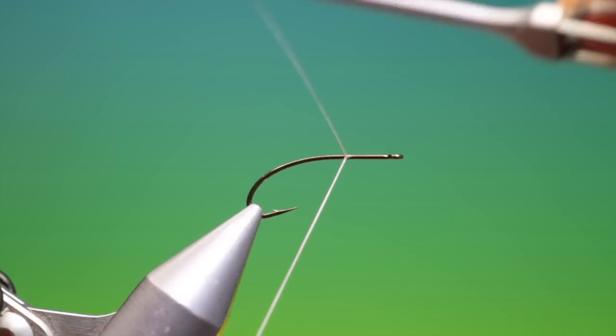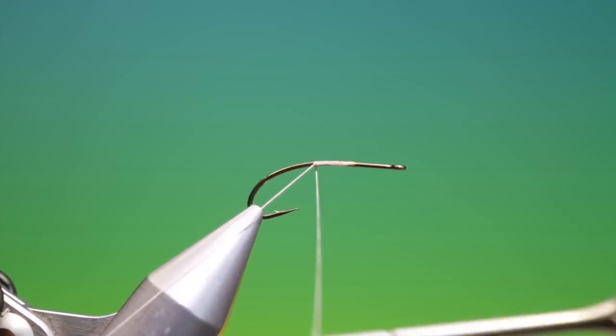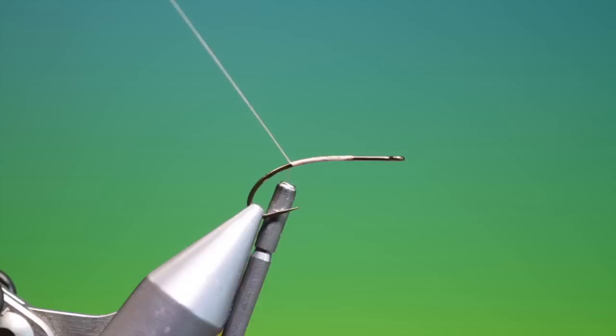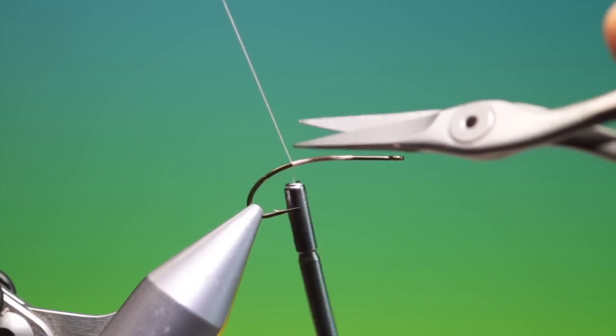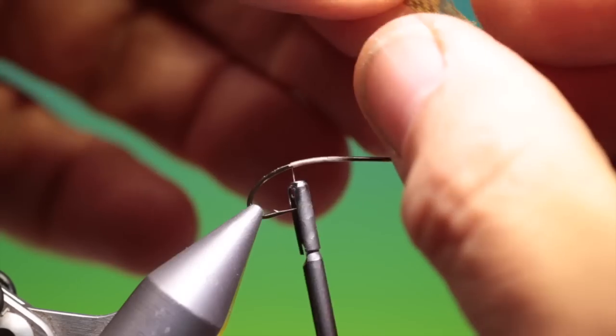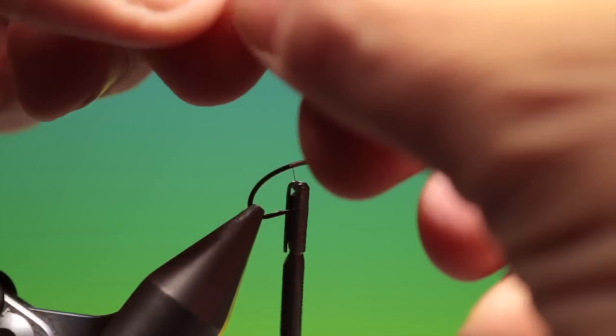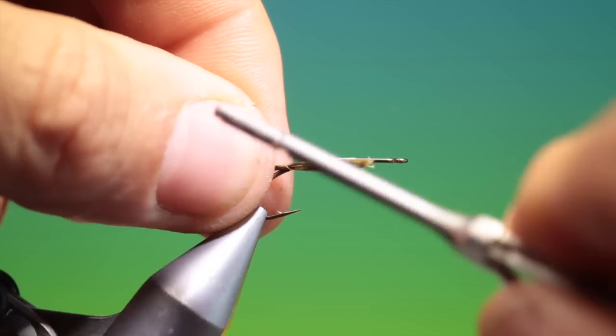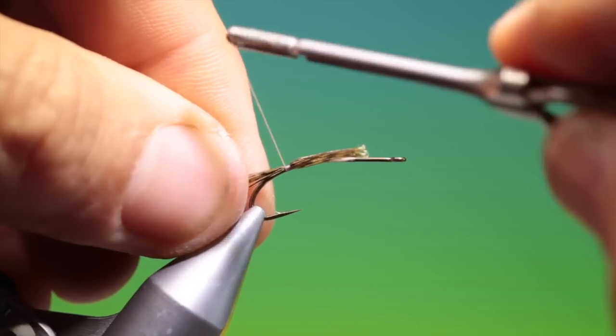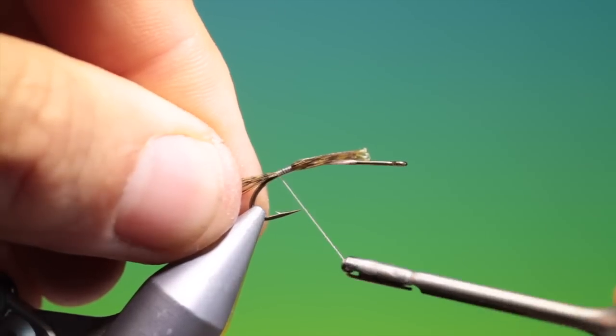I'll just start up here, work our way back. Now what we want is some dyed green partridge, speckled partridge fibers. And just tie these in at the back. We want a nice kind of splayed long tail here.